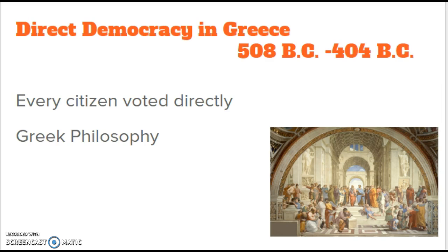The first couple of slides I want to go back a step and review. We started the class with the discussion of the history of democracy, going all the way back to ancient Greece, right around 508 BC. Direct democracy starts in Greece, and our definition of direct democracy is that every citizen voted directly. Now, reminder — when we say citizen, we're primarily talking about males, wealthy landowners. No slaves and no females were involved in the democratic voting process.